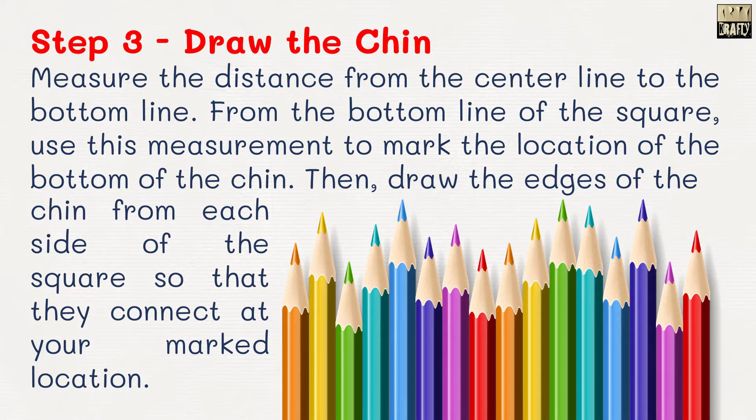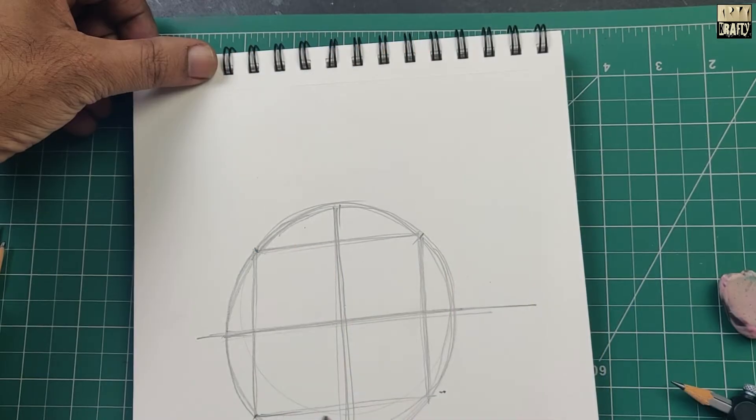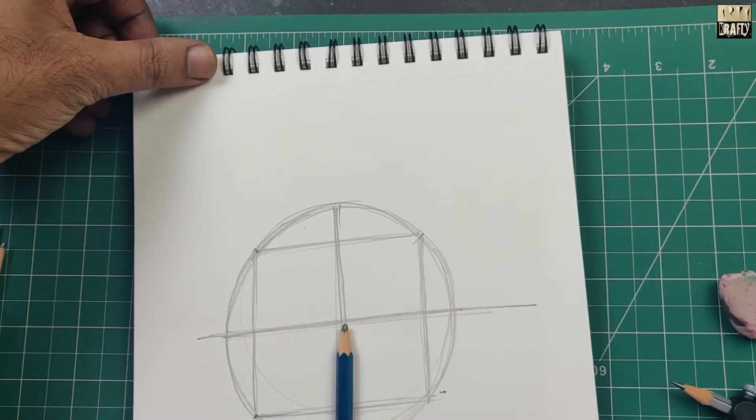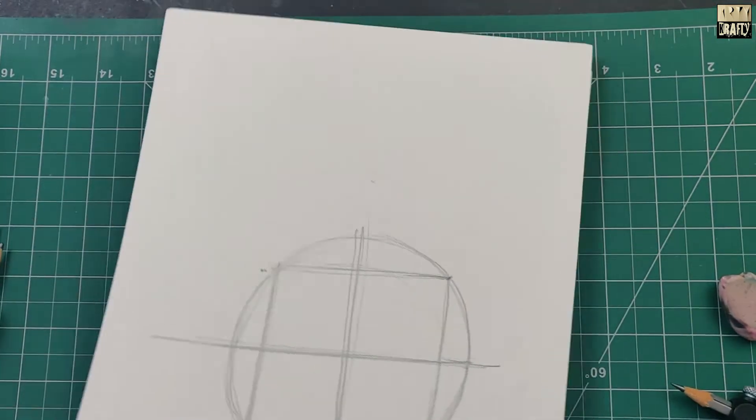Step 3. Measure the distance from the center line to the bottom line. From the bottom line of the square, use this measurement to mark the location of the bottom of the chin.